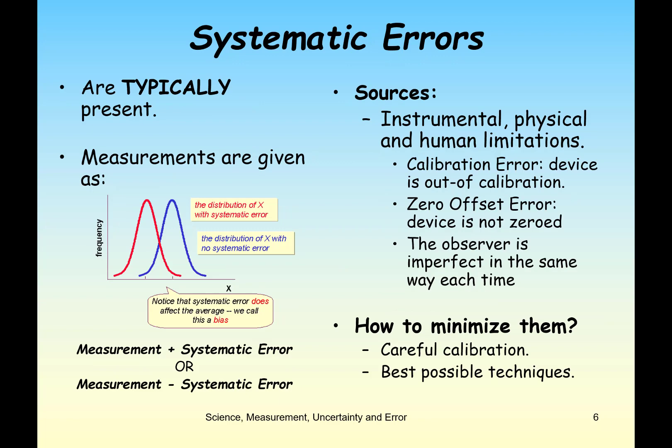Systematic errors are typically present and actually cause our measurements to be incorrect. Sources of systematic errors include instrumental, physical, and human limitations. For example, if our instrument is not calibrated correctly, we're going to get incorrect readings every time. If we have a zero offset error — meaning our device is not zeroed properly, like a scale that doesn't read zero when nothing is on it — every single other reading will be incorrect.